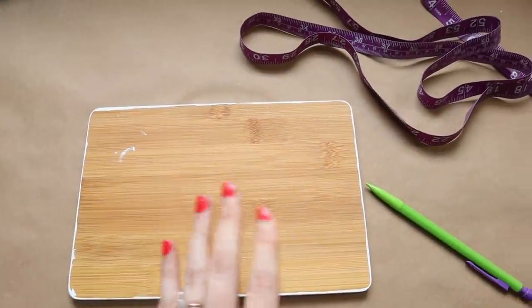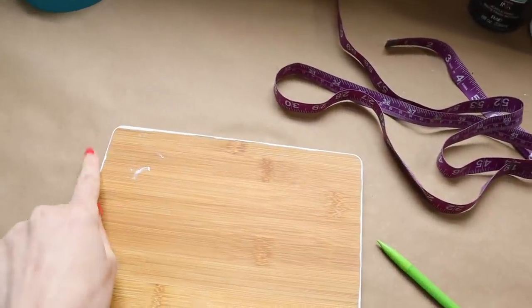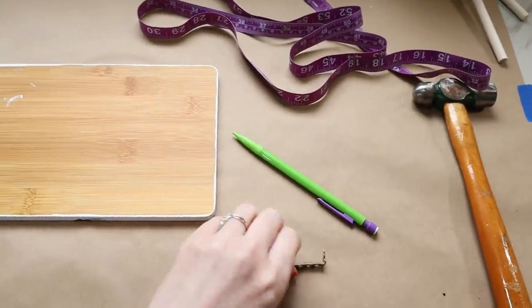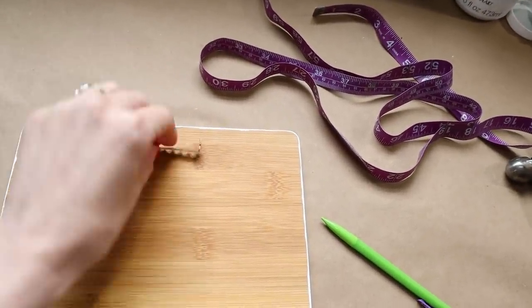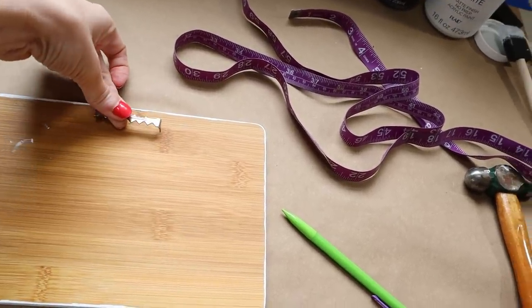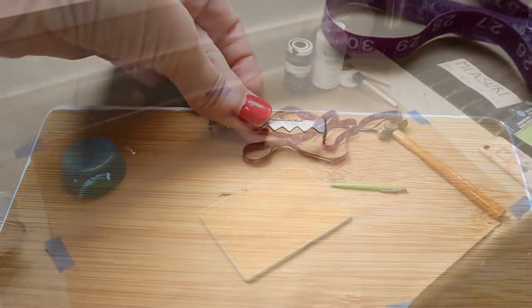All right so now that the paint has dried I flipped it over to the back and I use my measuring tape here to find the center of the board. Then I'm going to add my sawtooth picture hanger. I just tap down the sides and those will insert into the wood and you will have a nice picture hanger on the back.